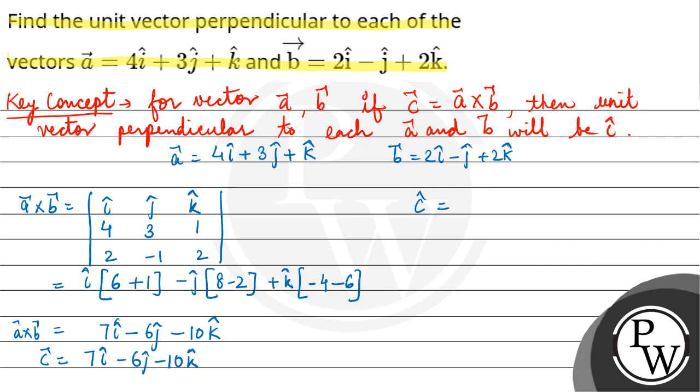Now c cap equals c vector divided by magnitude of c. So 7i - 6j - 10k upon its magnitude, which is √(7² + 6² + 10²). This equals 7i - 6j - 10k...